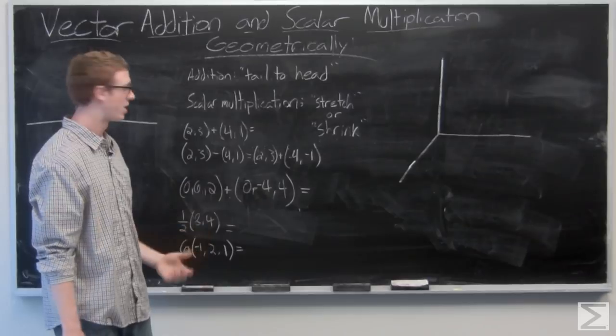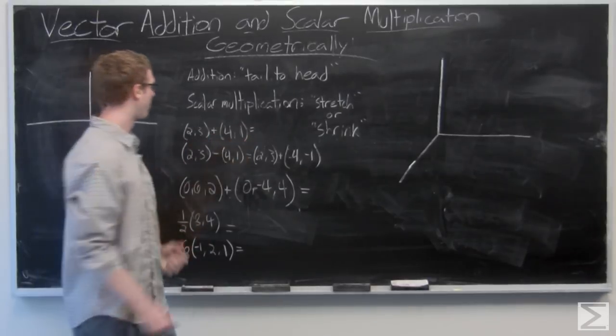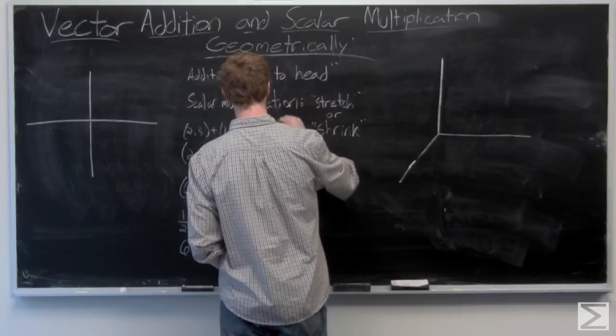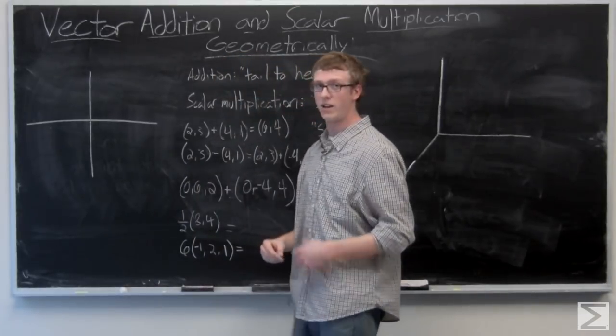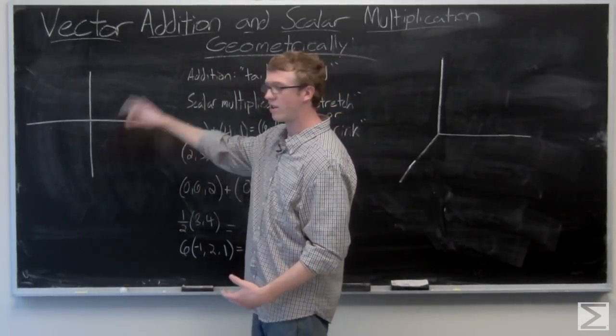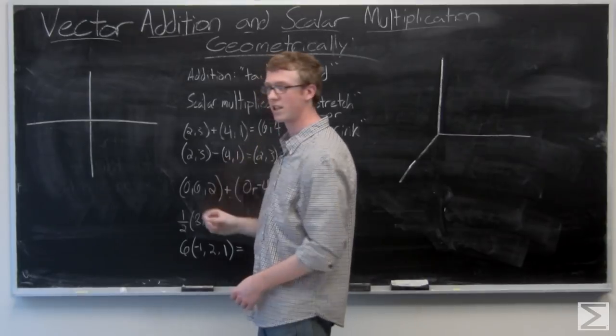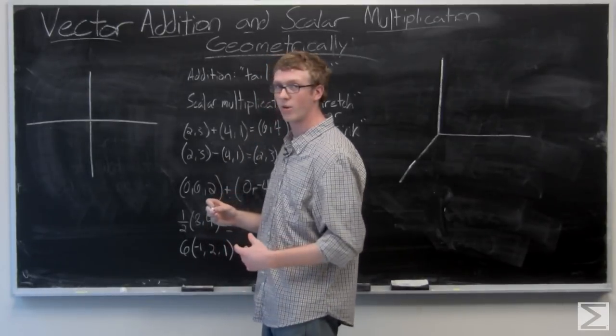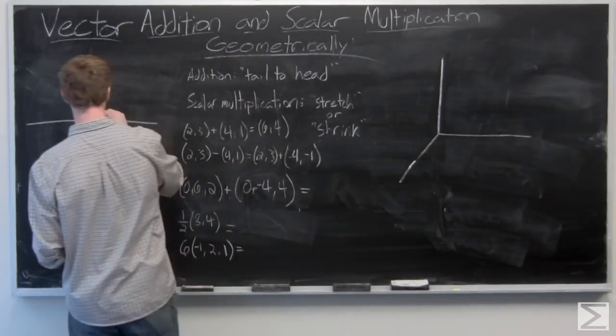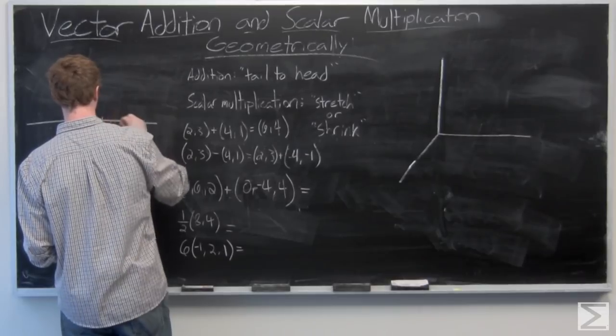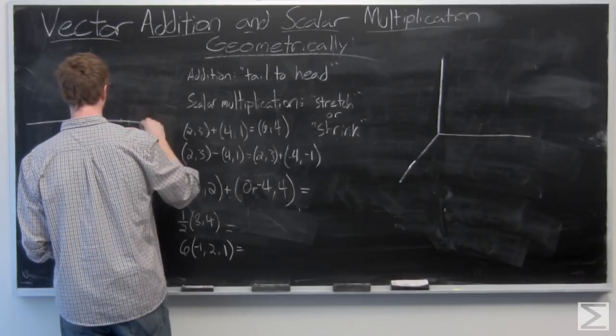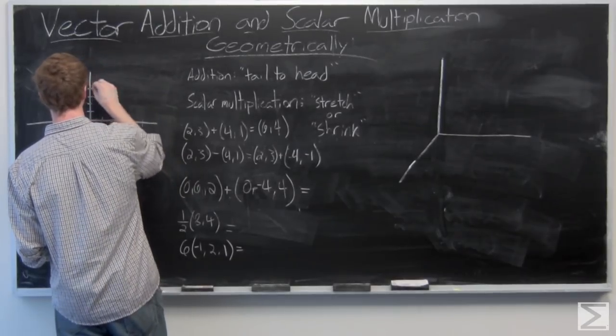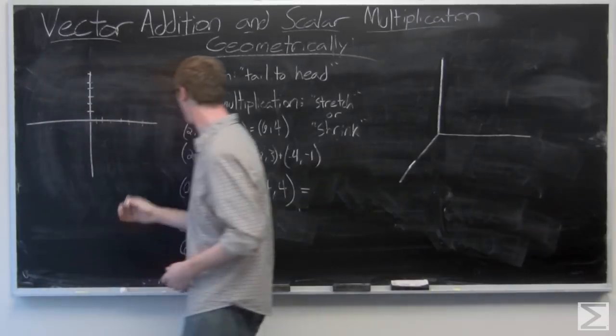We could just go ahead and draw a vector that is (6, 4), but let's take a look at how we're going to get there. So this is our plane.